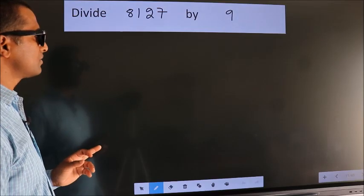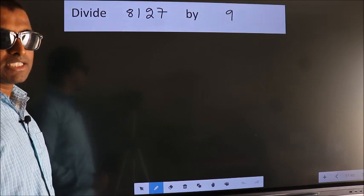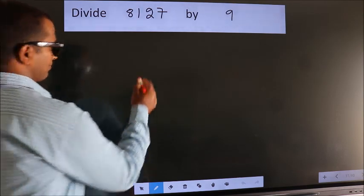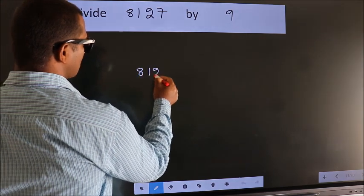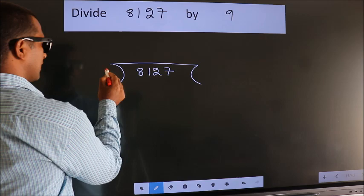Divide 8127 by 9. To do this division, we should frame it in this way. 8127 here, 9 here.